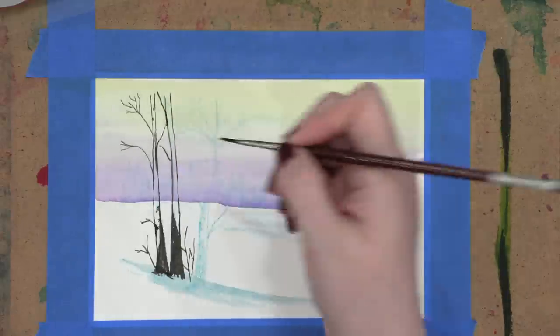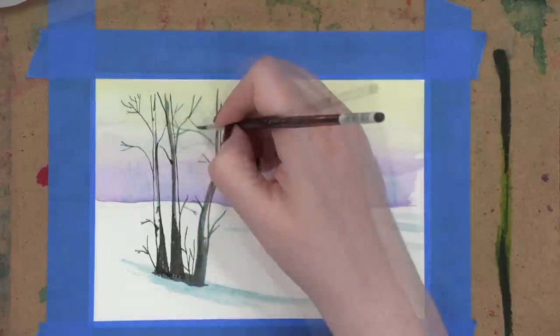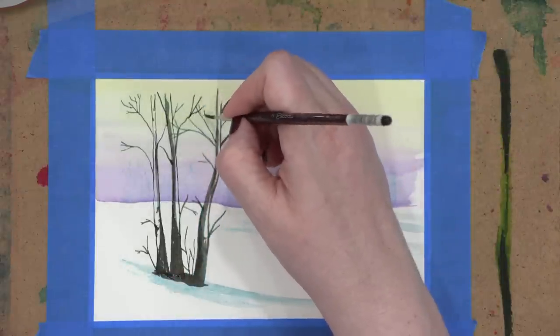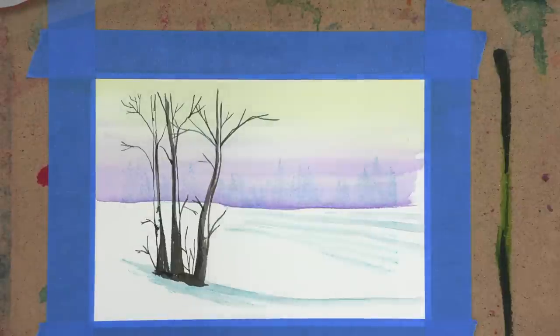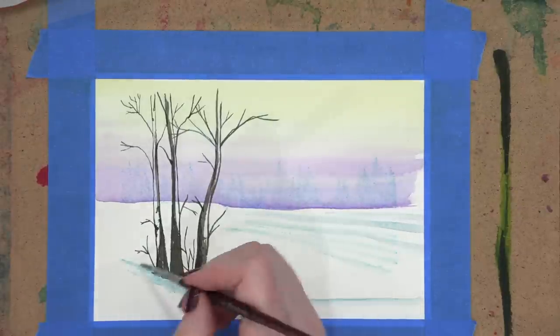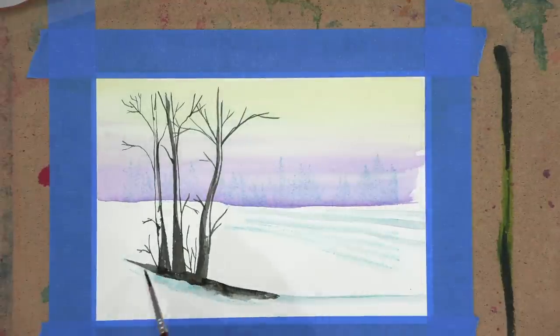So I'm going to speed ahead a little bit here and skip over some of this tree and just show how I finished up the painting of the trees right here. I added the shadow coming along the bottom and I got my brush wet and just pulled that color out so that I'd have a little variation in color.